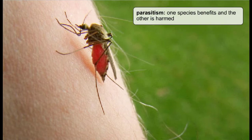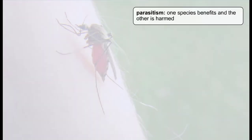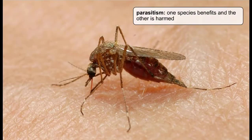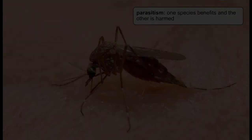Parasitism is a relationship in which one species benefits while the other is harmed, as in, for example, the mosquito, which feeds on the blood of humans and other mammals to feed its eggs.